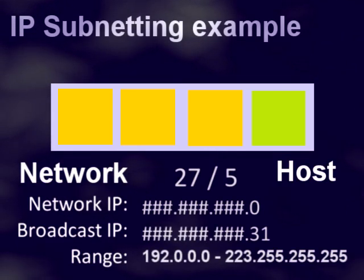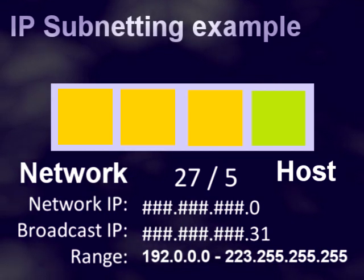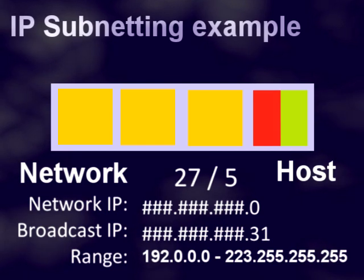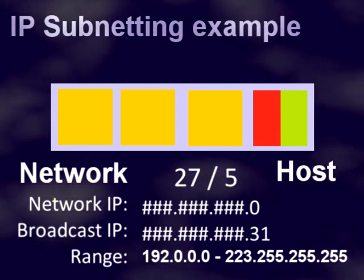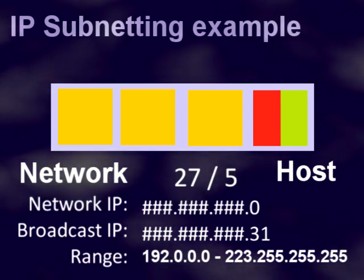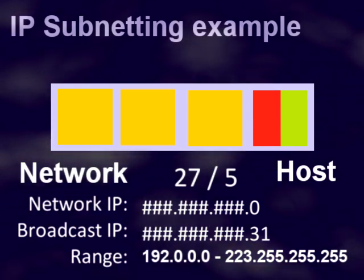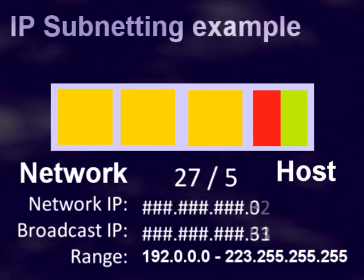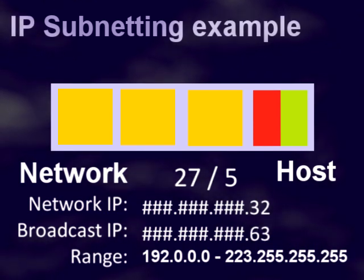IP subnetting takes a few bits — usually 3, 4, or 5 — from the host section to be used in the network address. If 3 bits are used for the network side, this will create 8 network addresses (2 to the power of 3), minus 2 for the network ID and broadcast address, which produces 6 networks. And 32 addresses (2 to the power of 5), minus 2, makes 30 usable addresses on the network.